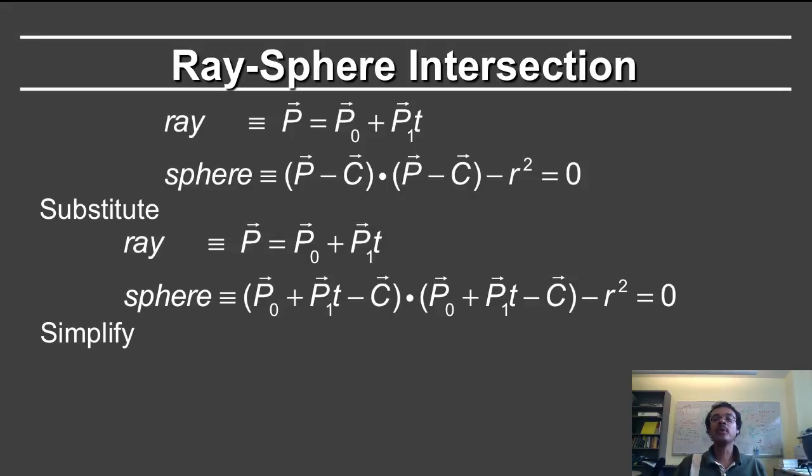This is simple, and what we are solving for is the distance along the ray t. So we know the other parameters. We know p0 and p1 for the ray. We know the central location c for the sphere, as well as the radius r squared.